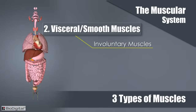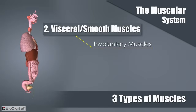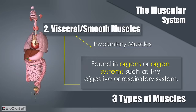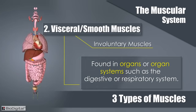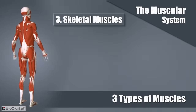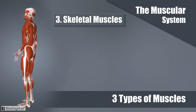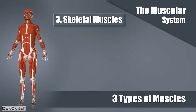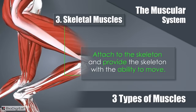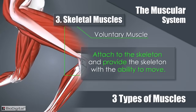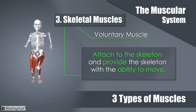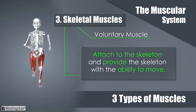The visceral or smooth muscles are also considered involuntary. These muscles are found in organs or organ systems such as the digestive or respiratory system. The third type is the skeletal muscle — what we typically think of when talking about muscles. These attach to the skeleton and provide it with the ability to move. Skeletal muscles are classified as voluntary because we must make a conscious effort to make them move.